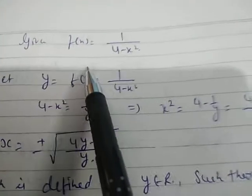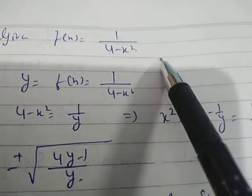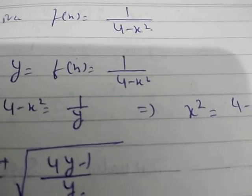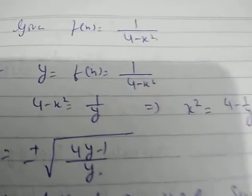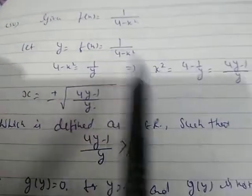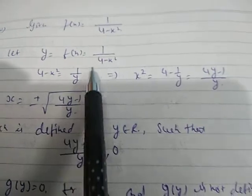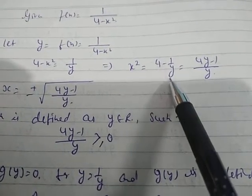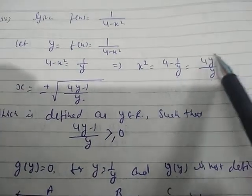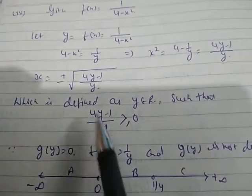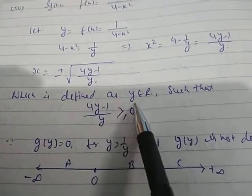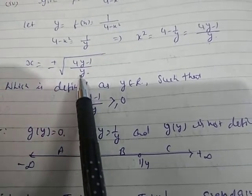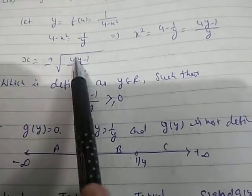The fourth function is f(x) = 1/(4-x²). For domain, 4-x² ≠ 0 — you can work that out yourself. For range: let y = 1/(4-x²), so 4-x² = 1/y, meaning x² = 4 - 1/y = (4y-1)/y. Let g(y) = (4y-1)/y. Then x = ±√(g(y)), which is defined for y ∈ R such that y ≠ 0 and g(y) ≥ 0.